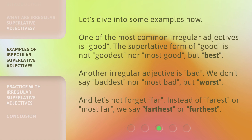Let's dive into some examples now. One of the most common irregular adjectives is 'good.' The superlative form of good is not 'goodest' nor 'most good,' but 'best.' Another irregular adjective is 'bad.' We don't say 'baddest' nor 'most bad,' but 'worst.' And let's not forget 'far.' Instead of 'farthest' or 'most far,' we say 'farthest' or 'furthest.'